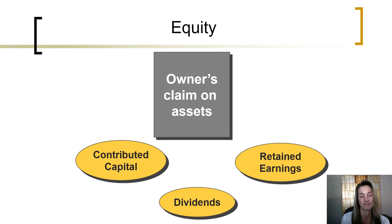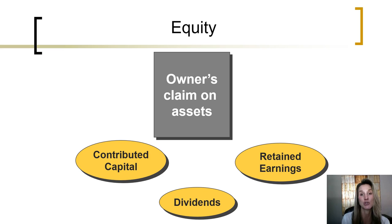And finally, equity. Equity represents the owner's claim on the assets. Essentially, if the company were to use all of its assets to pay off its creditors and liabilities, anything remaining would belong to the owners. Equity is impacted by three primary things: contributed capital, or how much owners have invested into the company, and the amount of earnings retained within the company — the profits that have not yet been paid out as dividends to the owners.